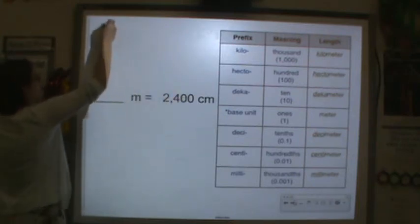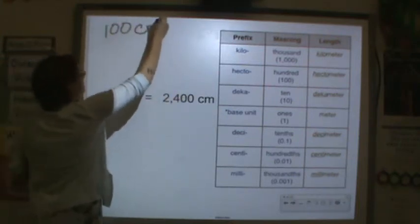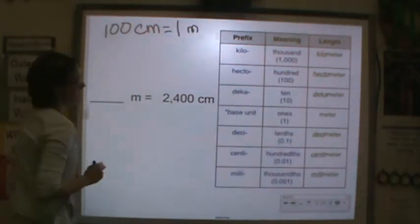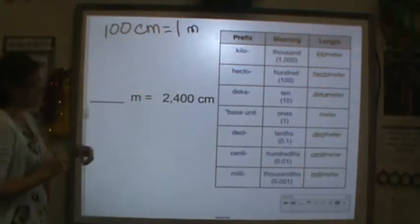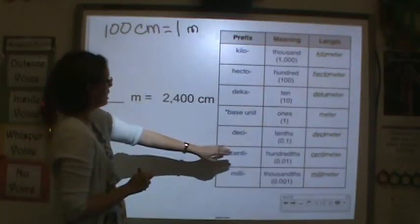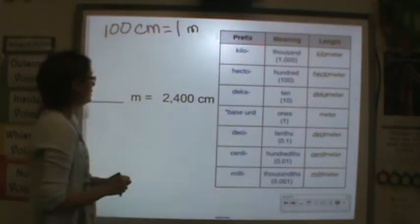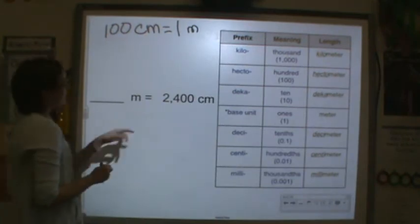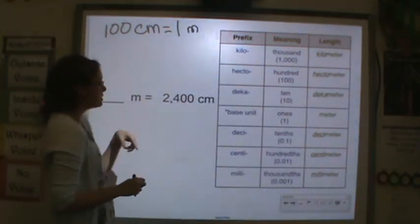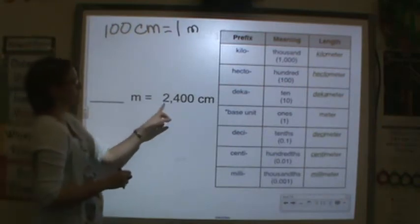Now let's talk about centimeters. There are 100 centimeters in one meter because centimeters are smaller. So there are a hundred centimeters in one meter.